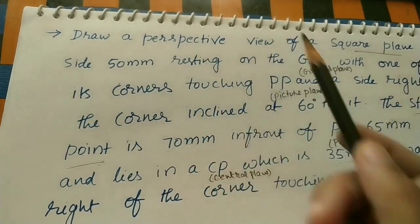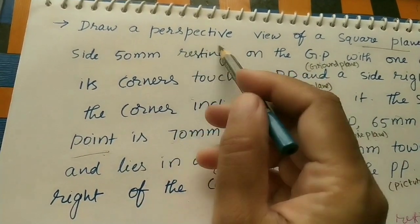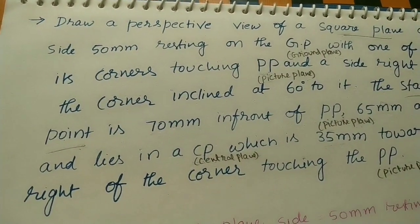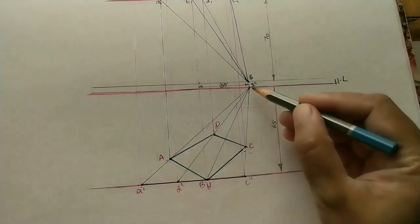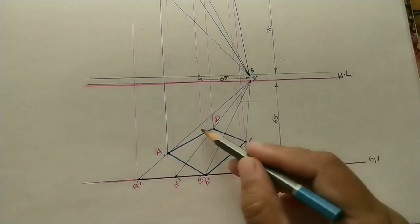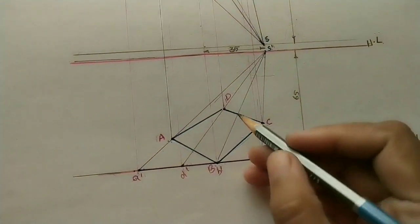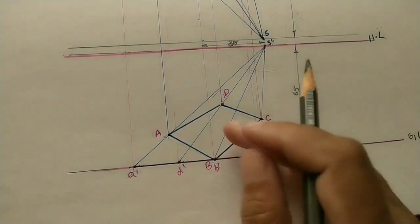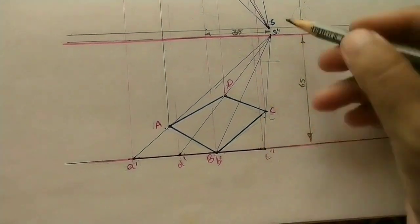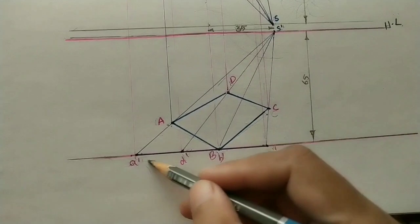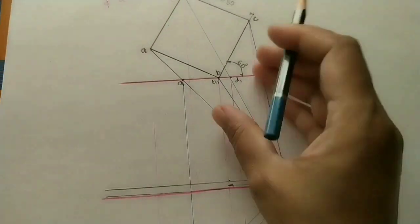We will discuss how to draw a perspective view. Perspective view means whatever we are watching as a three-dimensional view is called perspective view. In short, whatever image we are taking from a camera is also called perspective view. Here I have already drawn the diagram — the observer is watching one plane on the ground. This is the perspective view of the square plane on the ground, and this is the side view.